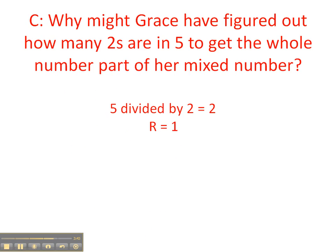Question C is, why might Grace have figured out how many twos are in five to get the whole number part of her mixed number? Well, the way she can do this is she can divide five by two. And five, as you know, doesn't divide by two evenly. We have a remainder. But five divided by two is two with a remainder of one.